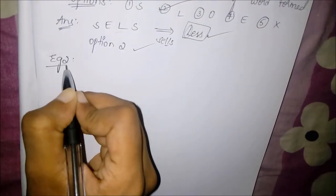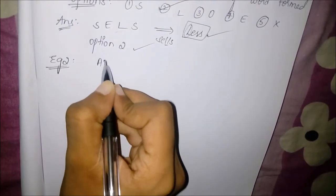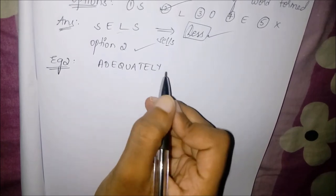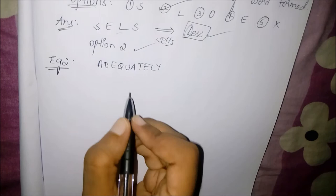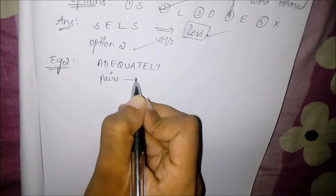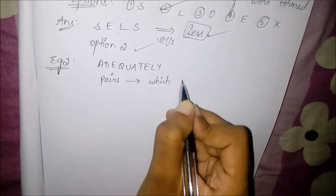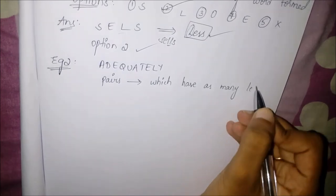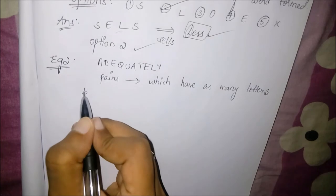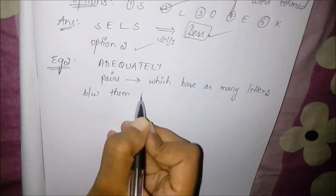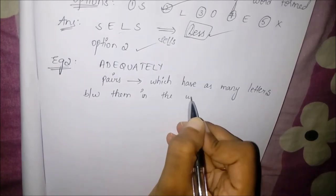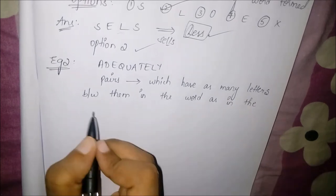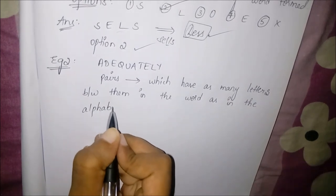Now let's go to the second example. The question asked is: how many pairs of letters are there in the word 'adequately' which have as many letters between them in the word as in the alphabet? This means we have to find those pairs which have the same letter gap in the given word as in the A-to-Z alphabets.